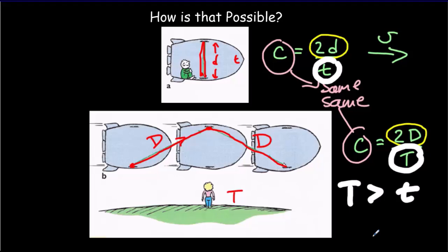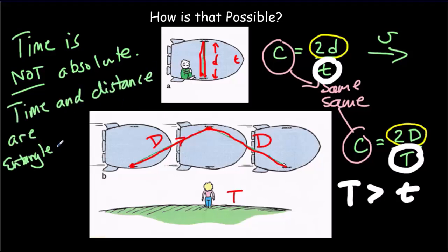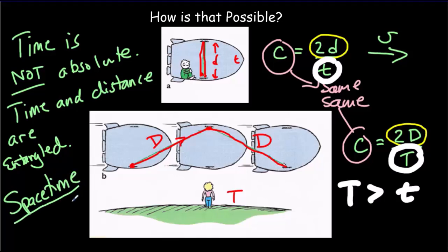That's critical. We always assumed that time is absolute, but time is relative. Different observers measure different values for time depending on their relative motion — time is not absolute. And time and distance are going to have to be entangled. If everybody is going to measure the same speed of light, time and distance have to be connected — they have to be the same sort of stuff. We have a special name for that entanglement: we call it spacetime.